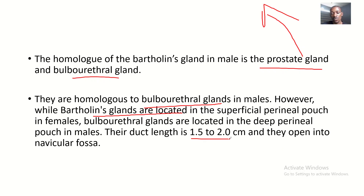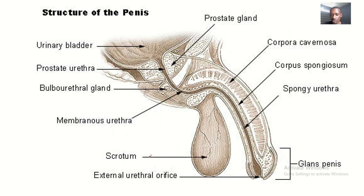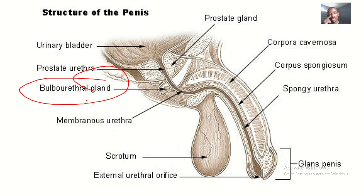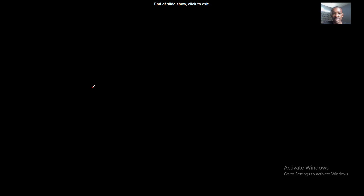While Bartholin's glands are located in the superficial perineal pouch in females, the bulbourethral glands are located in the deep perineal pouch in males. In adults they are 1.5 to 2 centimeters long and they open into the navicular fossa. The bulbourethral gland develops from the urogenital sinus, just as the Bartholin's glands in females also develop from the urogenital sinus.